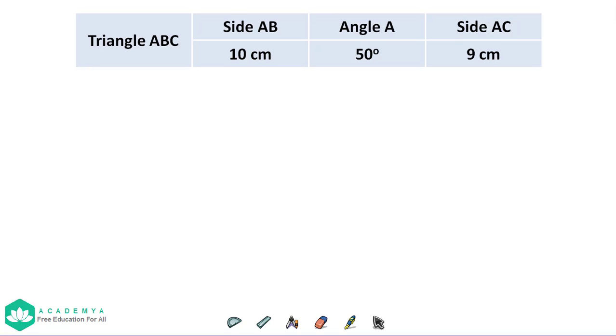How to draw a triangle with given two sides and one angle. Let's take a look at this example. We have to draw triangle ABC with side AB 10 centimeters, angle A 50 degrees, and side AC 9 centimeters.